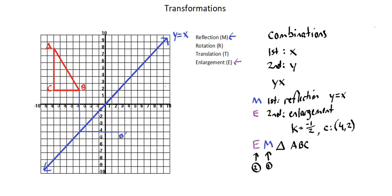Now point C. Point C to the mirror line is a downward move of 10, from y equals 2 to y equals negative 8. The mirror image will be a move right of 10, from x equals negative 8 to x equals 2. So C prime is (2, negative 8).